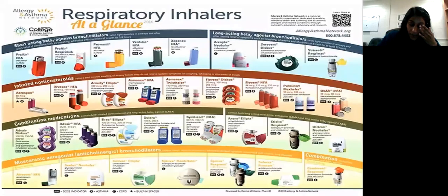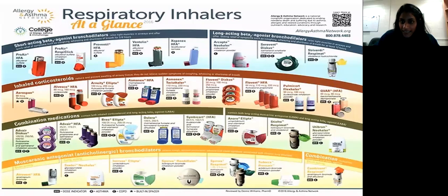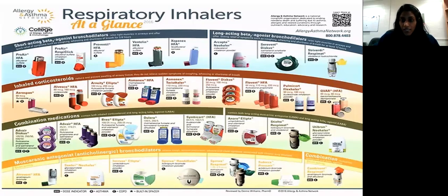To summarize inhaler types: short-acting beta agonists (SABA), long-acting beta agonists (LABA) — not used in isolation for asthma — inhaled corticosteroids (ICS), combination ICS-LABA, LABA-LAMA combinations which are more COPD-spectrum, and primary LAMA. It's good to have inhaler reference charts in your office, since even specialists need to reference what's covered and what's available for each patient.